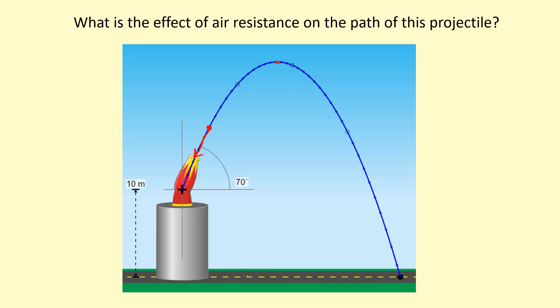Over here at the top, because it's going horizontally, the air resistance is going to be in that direction. And when it's falling here, the air resistance will be in this direction.